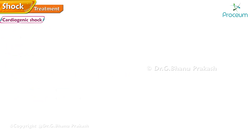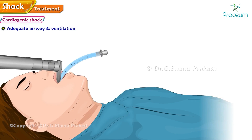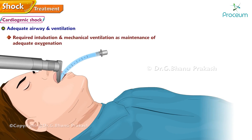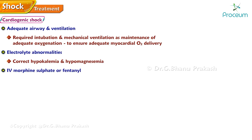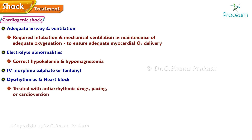Treatment of cardiogenic shock: ensure adequate airway and ventilation; if required, intubation and mechanical ventilation, as maintenance of adequate oxygenation is required to ensure adequate myocardial oxygen delivery. Electrolyte abnormalities, commonly hypokalemia and hypomagnesemia, should be corrected. Intravenous morphine sulfate or fentanyl is used for pain.